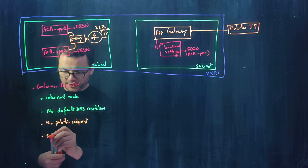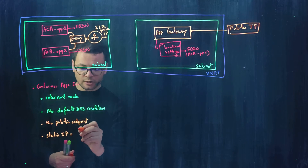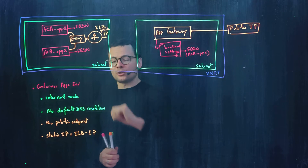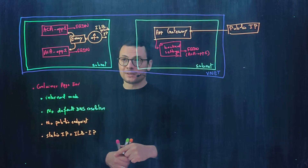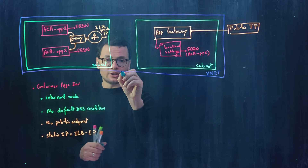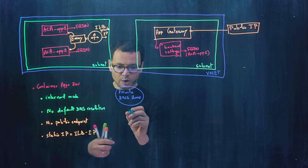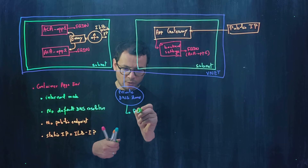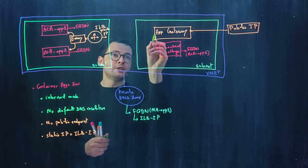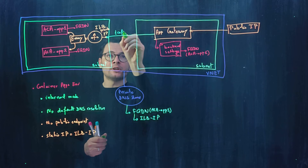To resolve this, we provide our own DNS resolution by attaching a private DNS zone within Azure. Within this private DNS zone, we configure it to map the FQDN of the Container Apps to the internal load balancer IP address. This way, the Application Gateway will be able to reach the private IP address of the internal load balancer, and the traffic will reach the container apps.